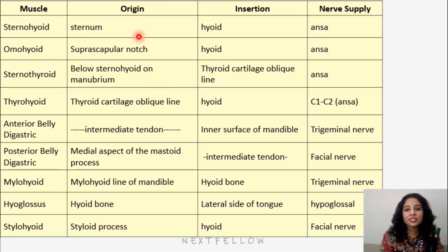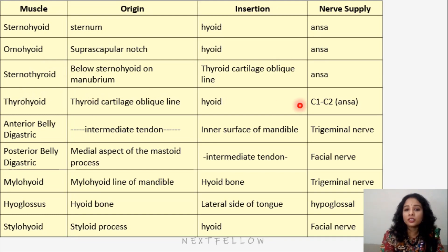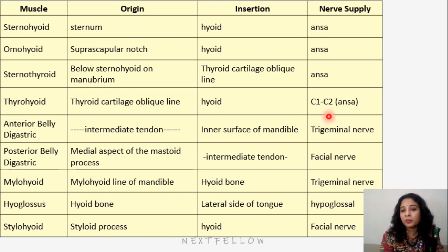Reviewing the table: sternohyoid is supplied by ansa cervicalis. Omohyoid — both superior and inferior bellies — is supplied by ansa cervicalis. Sternothyroid is also supplied by ansa cervicalis. Thyrohyoid is the exception — it is supplied by C1 fibers, mainly C1 (sometimes C2), which contribute to the ansa formation but supply thyrohyoid directly, not via the ansa loop.